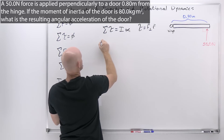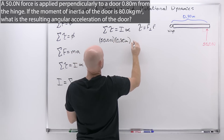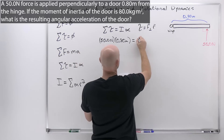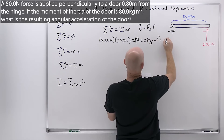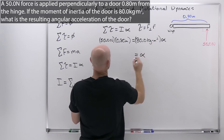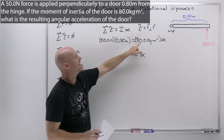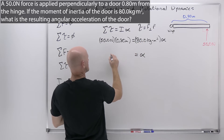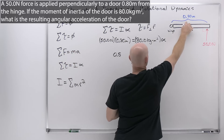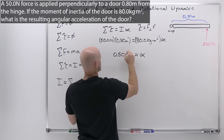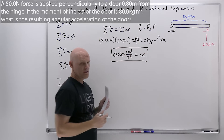Setting up the calculation: force times lever arm equals I times alpha, so 50.0 Newtons times 0.80 meters equals 80.0 kg·m² times alpha. Notice 0.8 is four-fifths, four-fifths times 50 is 40, and 40 divided by 80 is one-half. So alpha equals 0.50 radians per second squared — using two significant figures based on the 0.80 meters measurement. That is our angular acceleration.